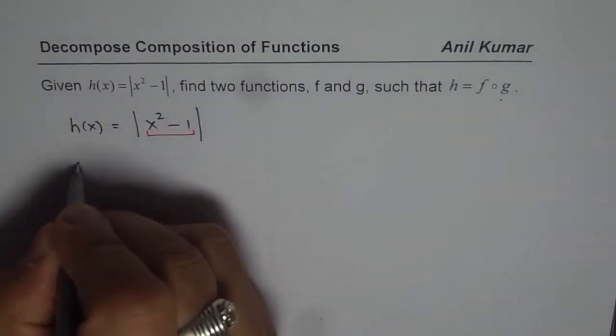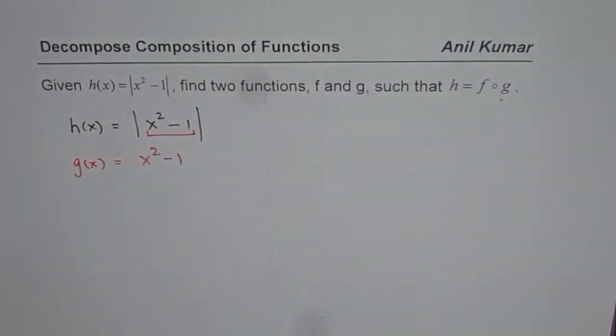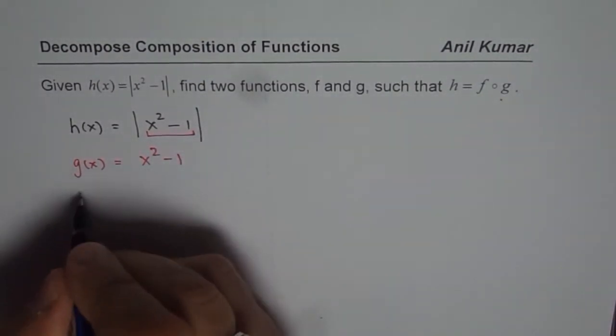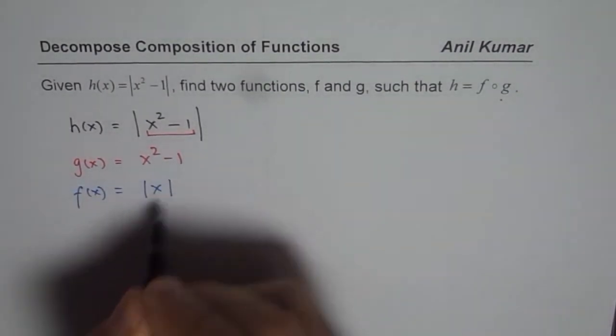So we can write this as g of x equals to x square minus 1 and f of x equals to absolute x.